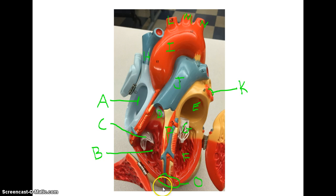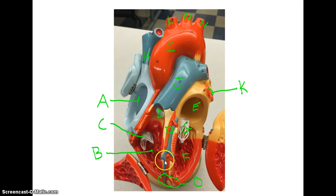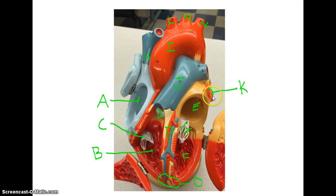You can also see the apex here, and the base runs along where the vessels connect. You have the septum, which is the muscular layer, technically called the myocardium. Another term you need to know is the pericardium, or pericardial sac — that's the sac in which the heart sits.